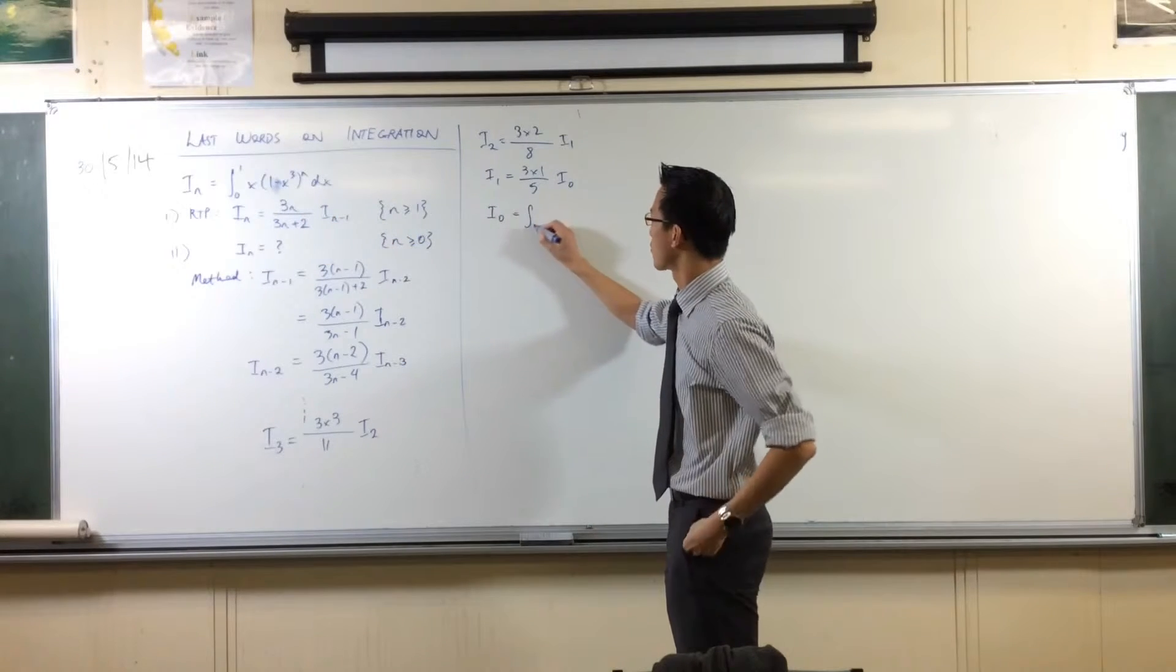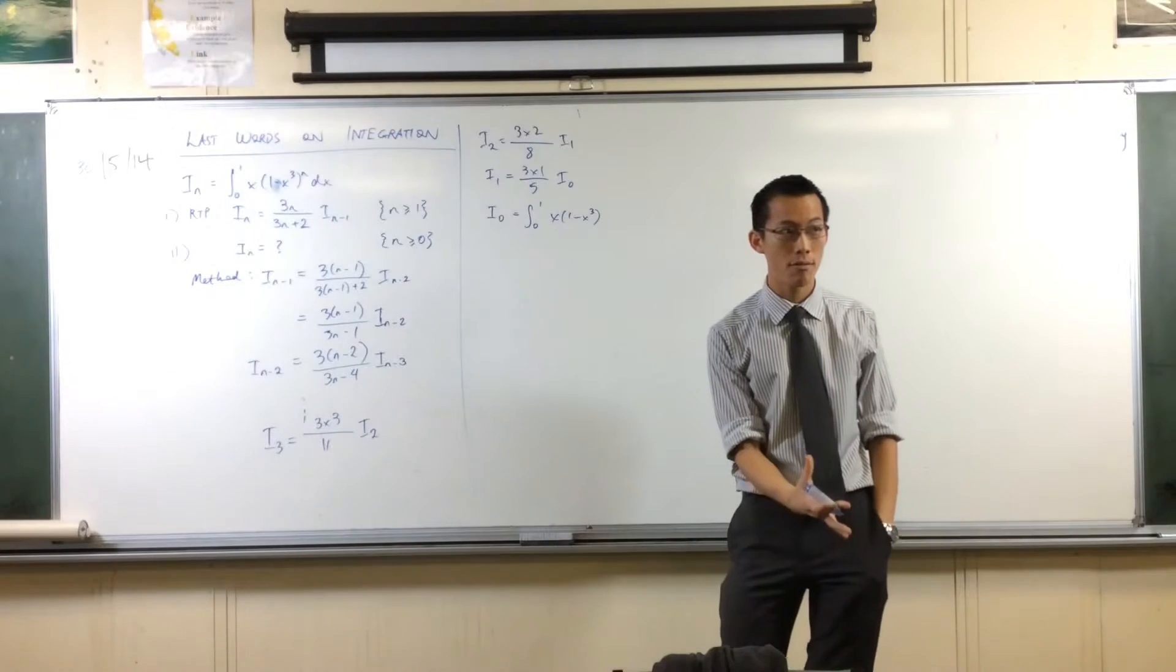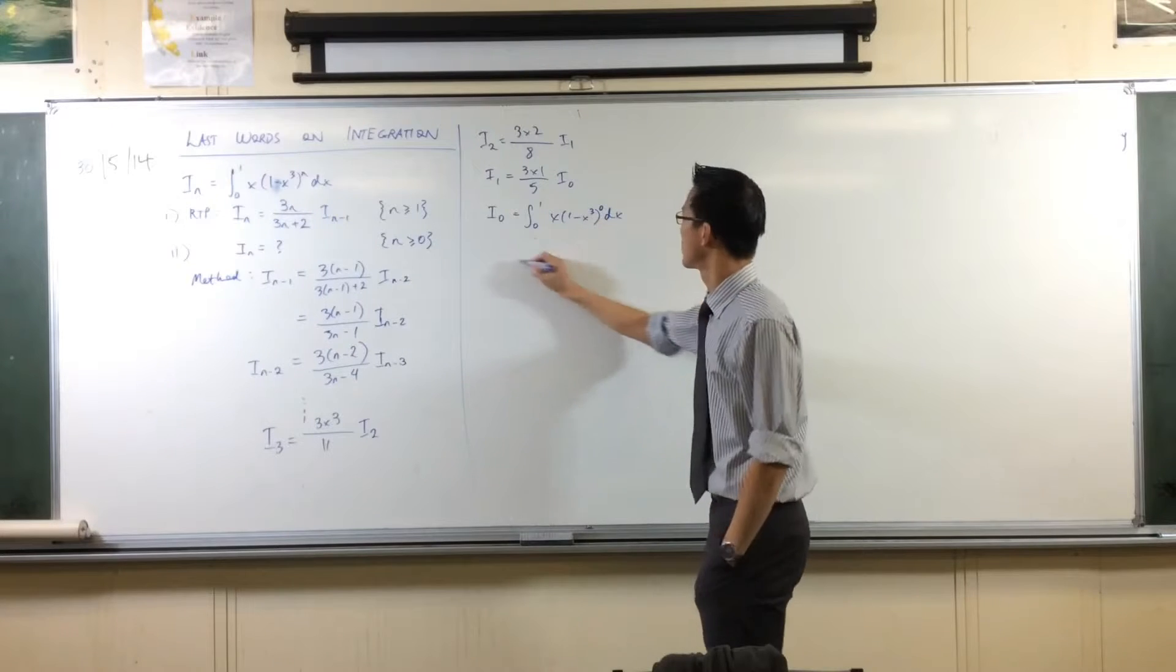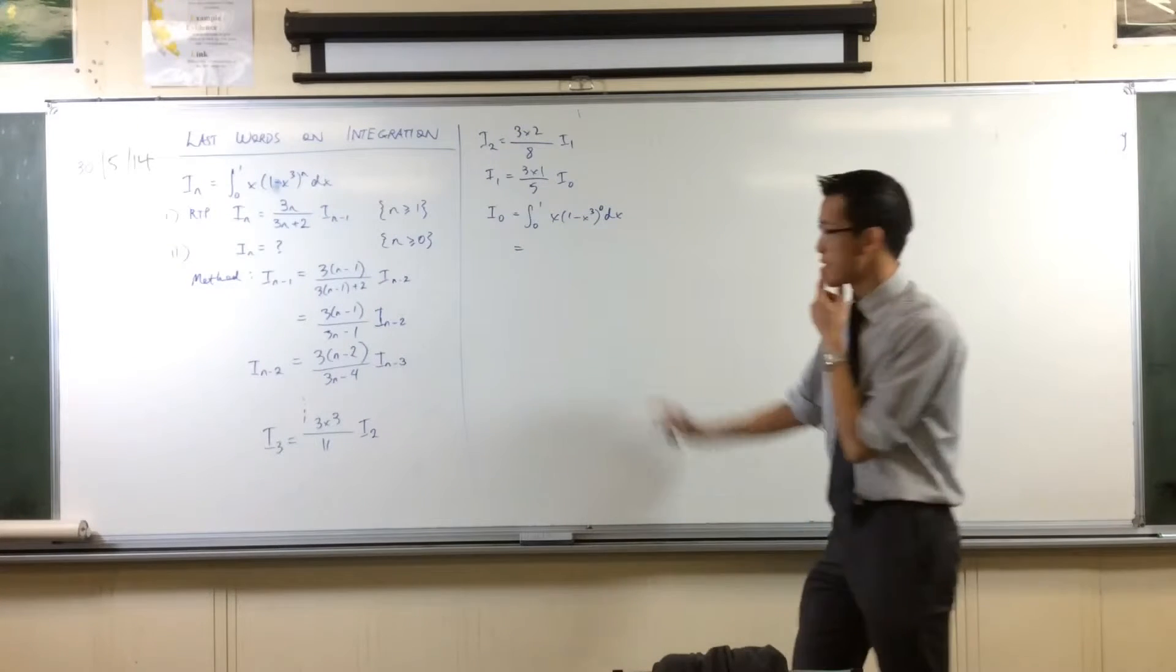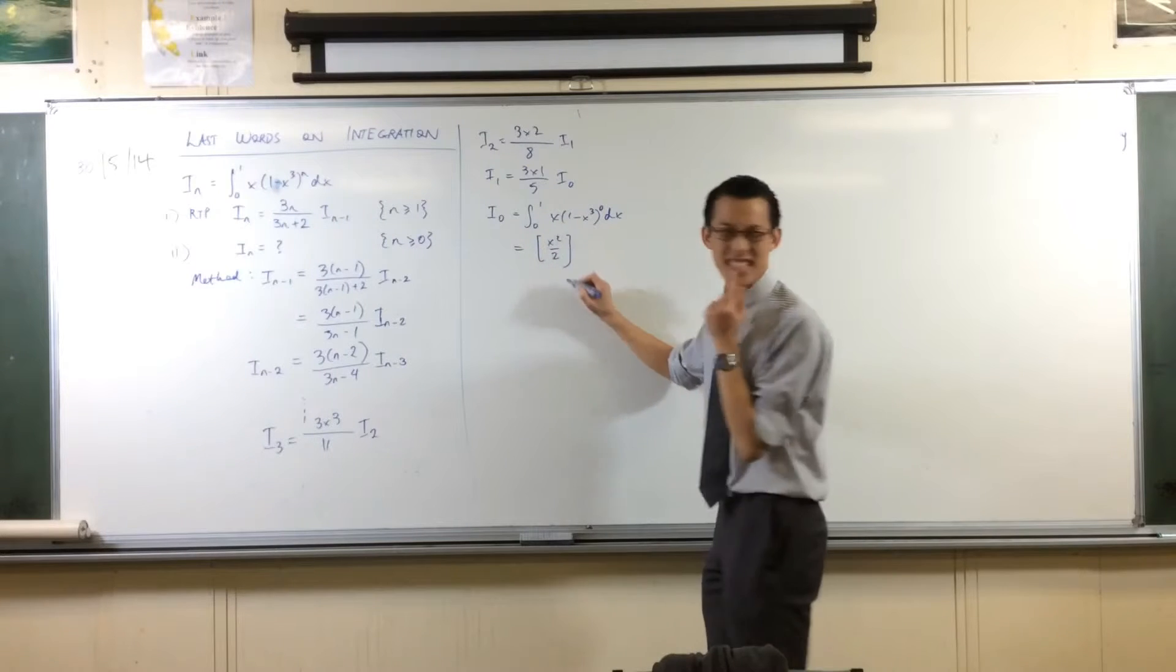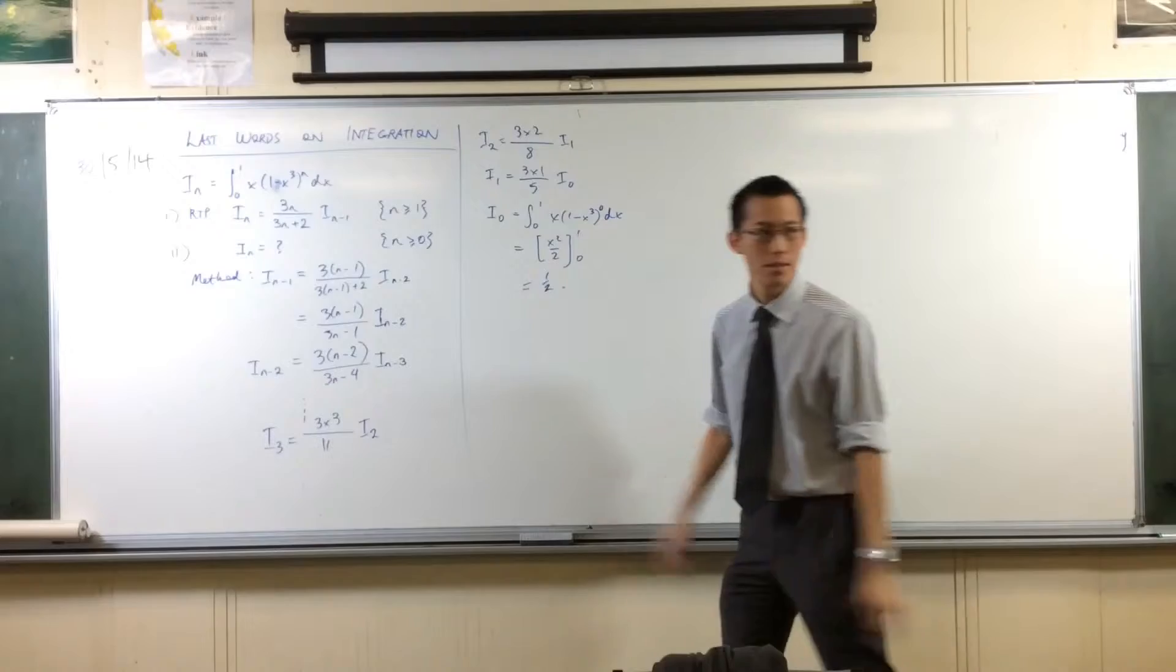I'm going to see what happens when I go all the way down. I_1, that's equal to, according to the recurrence relation, it'll be 3 times 1 on 5 times I_0. And once you get here, for I_0, you can't use the recurrence relation anymore. That was kind of the point of this. So therefore, I'm just going to evaluate it from the integral.